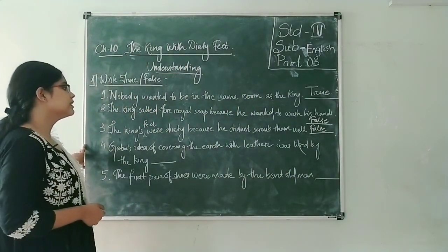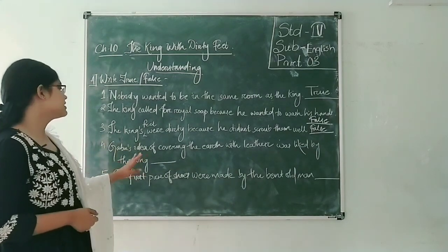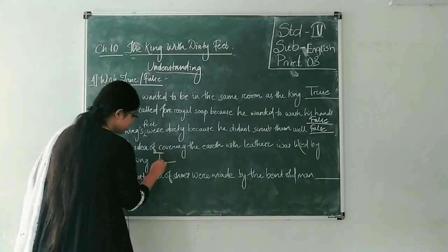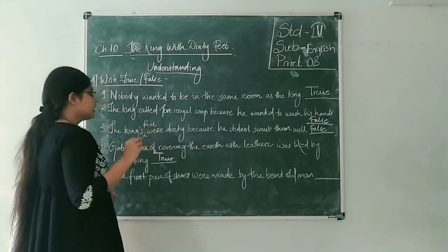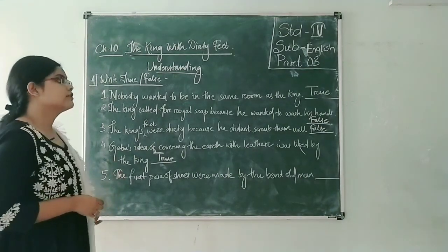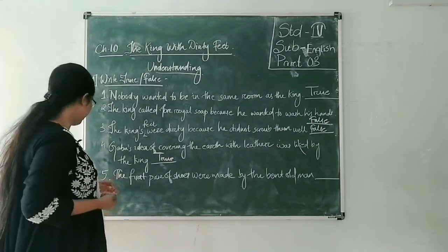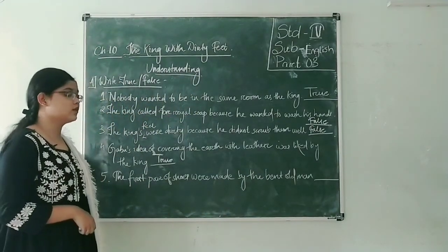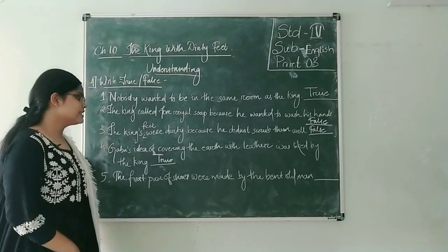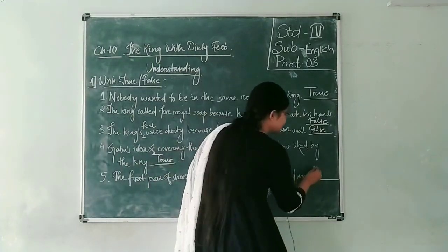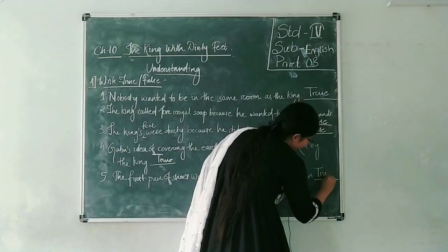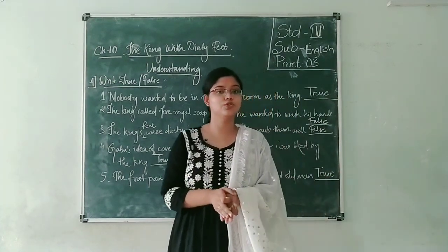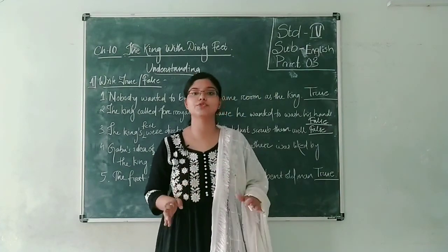Next: 'Gabo's idea of covering the earth with leather was liked by the king.' Yes, it was liked by the king — write down true. And the last statement: 'The first pair of shoes were made by the old bent man.' This is also true, since we learned that at the end of the chapter, the old man tied a piece of leather to the king's feet and that became his shoe — the first pair of shoes ever to be made.